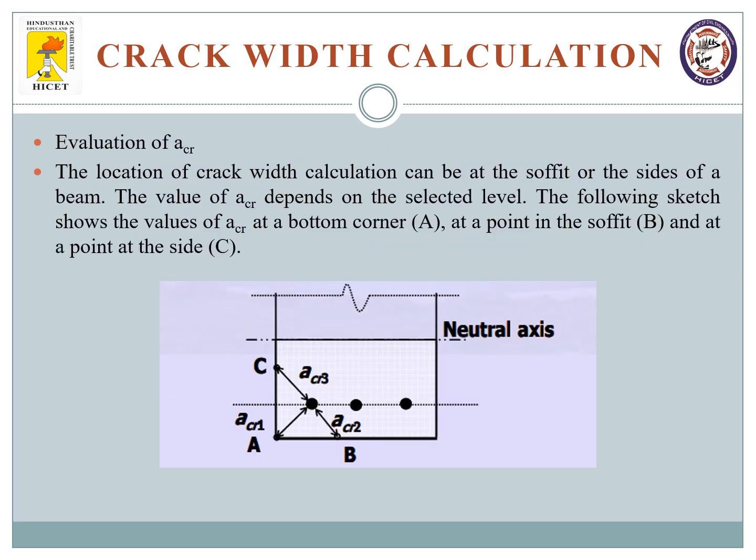As discussed in the previous slide, we will see how ACR is calculated according to IS-456. ACR is the crack width location. If you are taking one surface, the shortest distance to the nearest longitudinal bar. The location of crack width calculation can be at the soffit or sides of a beam. The value of ACR depends on the selected level.